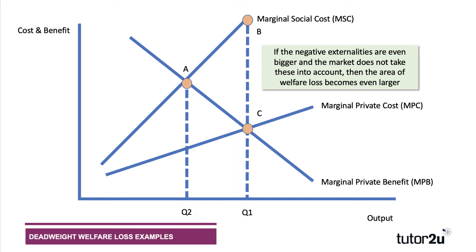So if externalities get worse, you can develop your diagram and say there's a potentially even bigger social welfare loss in terms of the deadweight loss of welfare. The welfare loss comes about because the market is not reaching a socially efficient or socially optimum output. We'd prefer to be at Q2 where we take the externalities into account; if the market ends up at Q1, you end up with a big welfare loss.